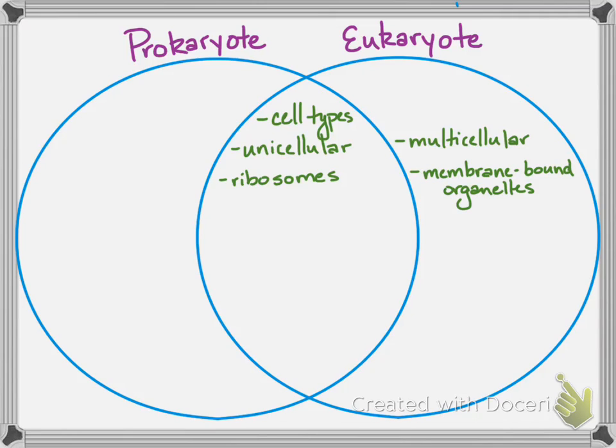All of the membrane-bound organelles we talked about — those specialized organelles that are often enclosed in a single or double membrane — are only in eukaryotic cells. Sometimes prokaryotes use some membrane division so that they can conduct things similar to photosynthesis or cellular respiration as we know them, but only eukaryotes have the membrane-bound organelles that we've been learning about.